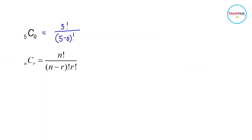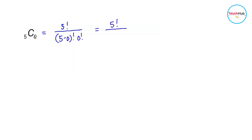Next, simplify C(5,0). By the formula, this equals 5 factorial divided by (5 minus 0) factorial times 0 factorial, which is 5 factorial divided by 5 factorial times 0 factorial. The 5 factorials cancel, leaving 1 over 0 factorial. Since 0 factorial equals 1, we get 1 divided by 1, which equals 1.